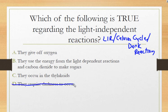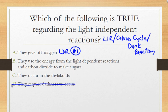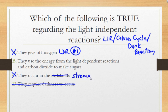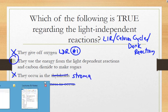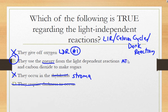First, D — there is no requirement of darkness, so eliminate that. Option A — giving off oxygen happens in the light dependent reaction, number one; when we split apart the water, oxygen is lost and the hydrogen makes NADPH. Option C — occurring in the thylakoid is also wrong, because the LIR actually occurs in the stroma. Our correct answer is B: energy from the light dependent reactions, in the form of ATP and NADPH, plus carbon dioxide, makes our sugar.